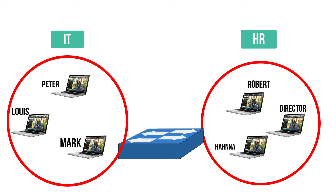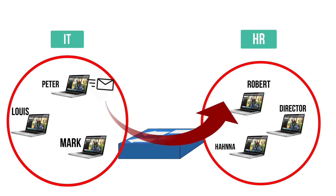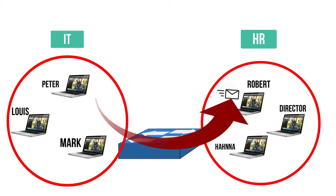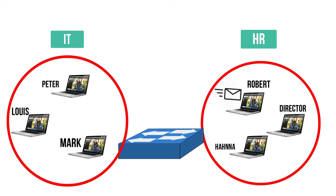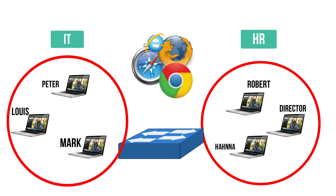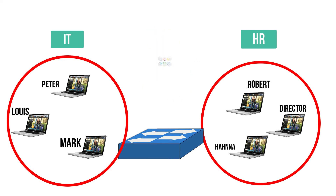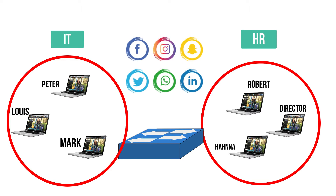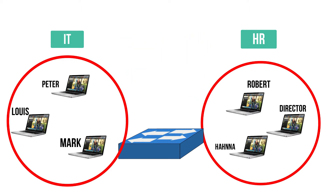Here we have an example network. We are going to use it to see some examples of communications based on the topics discussed before. When can we use unicast communication? The major part of the time, devices communicate one-to-one — for example, when Peter in the IT department sends an email to Robert in the HR department, or when you search the web to watch your favorite movie online, or even when you chat with your mother using social media. All of those are unicast communication.